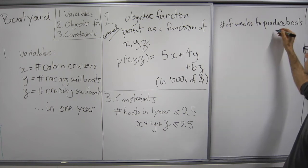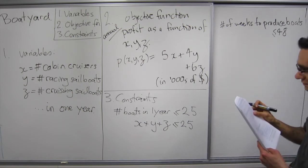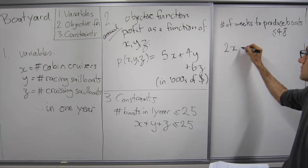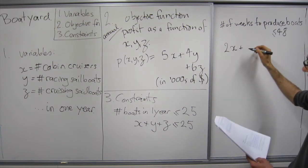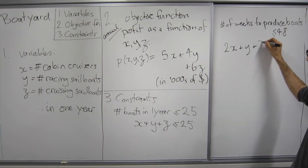And the number of weeks to make the boats is two weeks per cabin cruiser, and one week per racing sailboat, and three weeks per cruising sailboat.